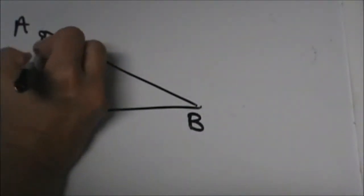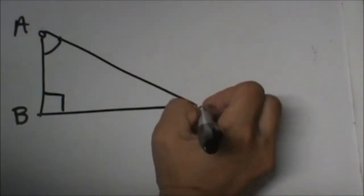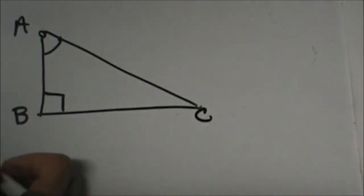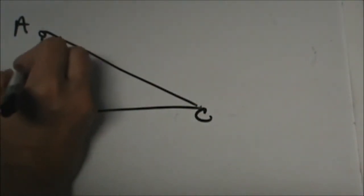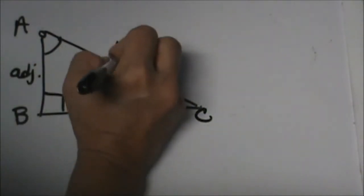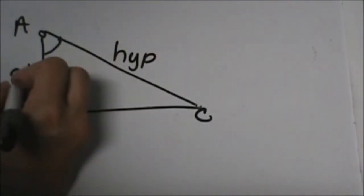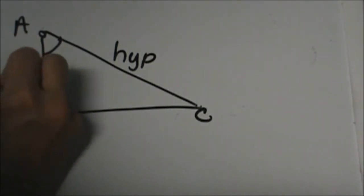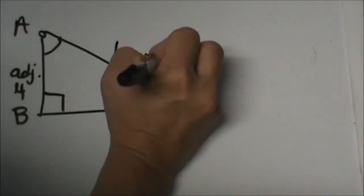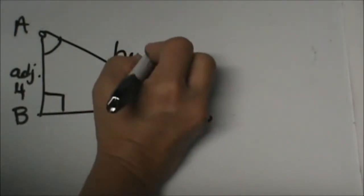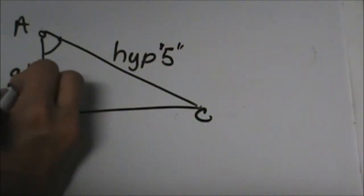Let's go to A. Cosine would be adjacent over hypotenuse. That means this side must be 4 and this side must be 5. Let's label these sides.